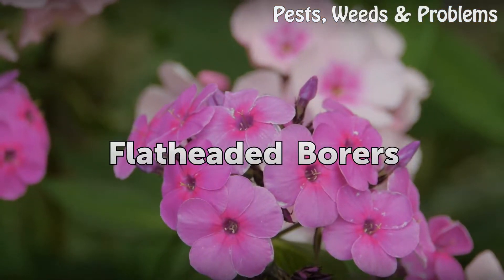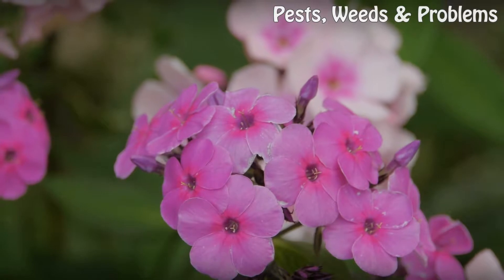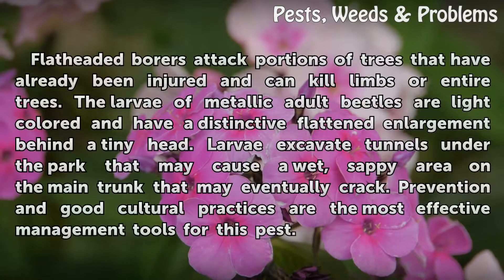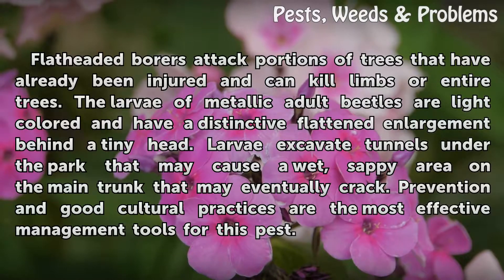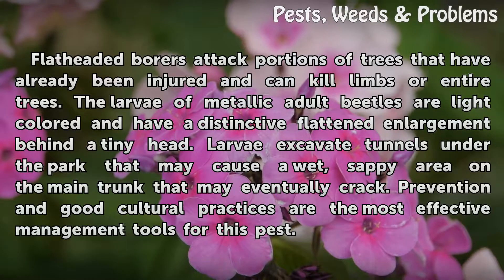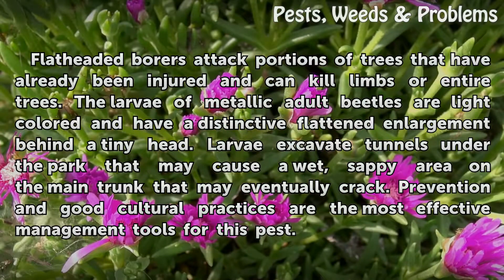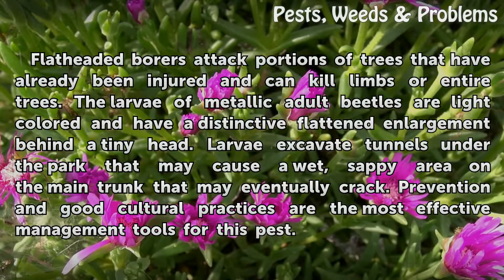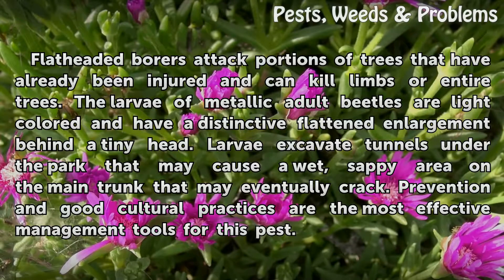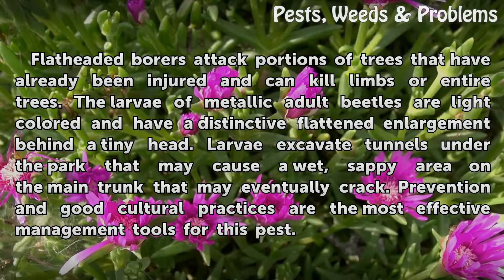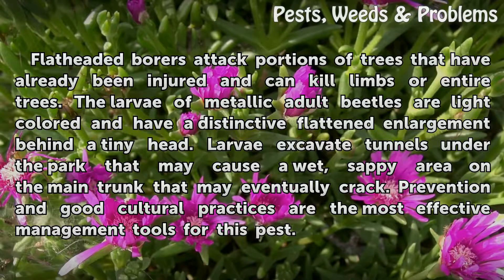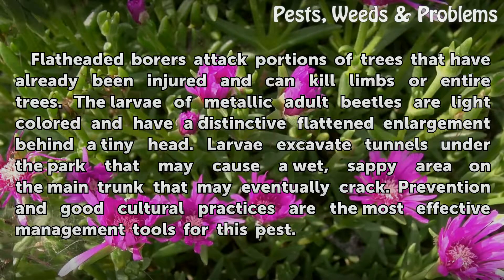Flat-headed borers attack portions of trees that have already been injured and can kill limbs or entire trees. The larvae of metallic adult beetles are light-colored and have a distinctive flattened enlargement behind a tiny head. Larvae excavate tunnels under the bark that may cause a wet, sappy area on the main trunk that may eventually crack. Prevention and good cultural practices are the most effective management tools for this pest.